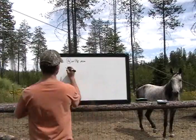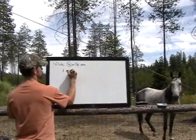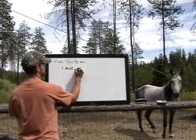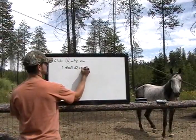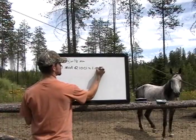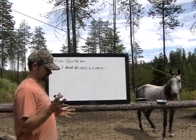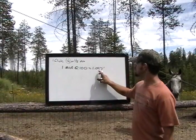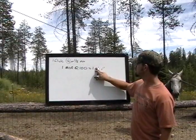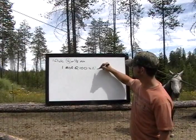Now, one full minute at 100 yards equals 1.047 inches. For all intents and purposes, we're going to call it one inch. That's how most people refer to it. It's just one inch at 100 yards.